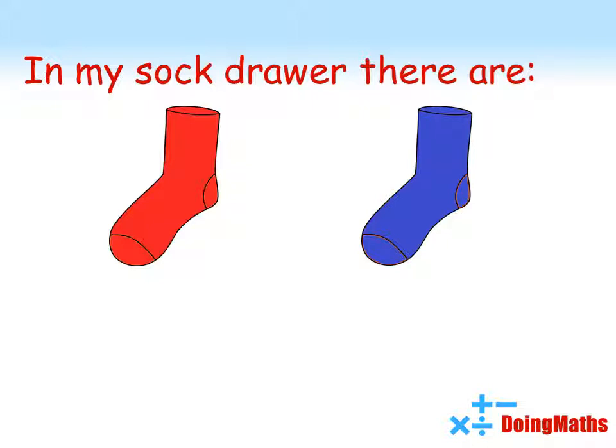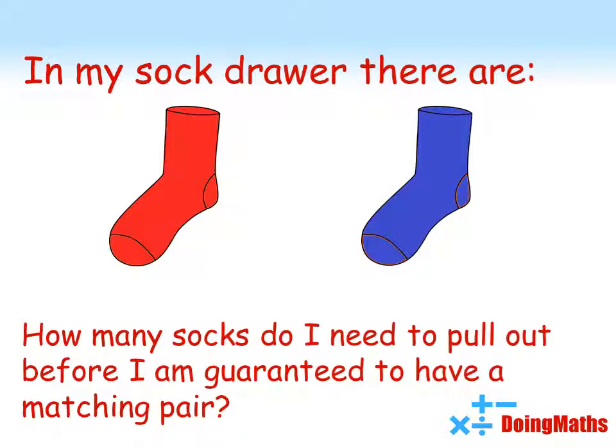What I want to know is if I go into my drawer in the dark and start randomly pulling out socks, how many socks do I need to pull out before I'm guaranteed to have a matching pair?